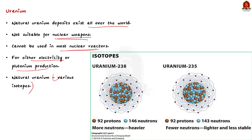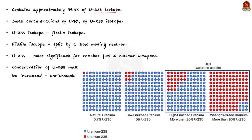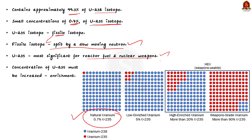Natural uranium contains approximately 99.3% of the uranium-238 isotope and only about 0.7% of the uranium-235 isotope. Uranium-235 is a fissile isotope — one that can be split by a slow-moving neutron — and it is the most significant isotope for nuclear fuel and nuclear weapons. But to be useful for either purpose, the concentration of uranium-235 must be increased by separating it from uranium-238 through a process known as enrichment.